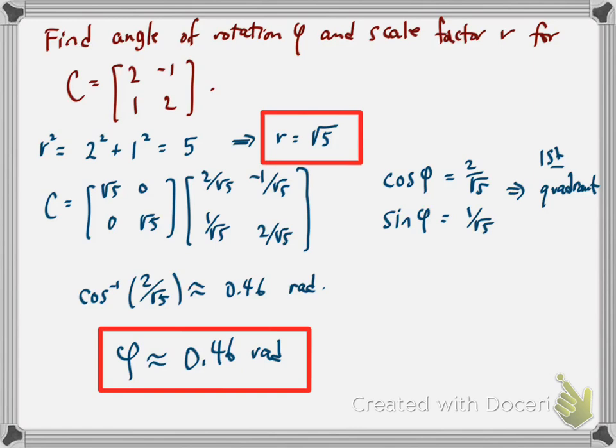That tells me that cos φ = 2/√5 and sin φ = 1/√5, so the point is in the first quadrant. And if I use arccos(2/√5), I see this is approximately 0.46 radians. So the angle of rotation is 0.46, and the scaling factor is √5.